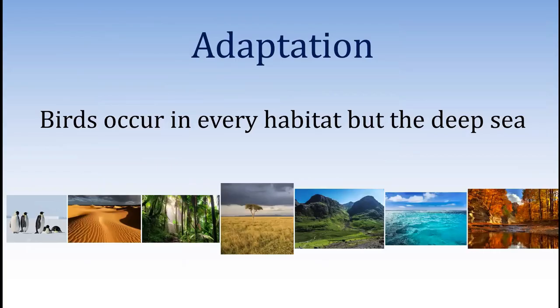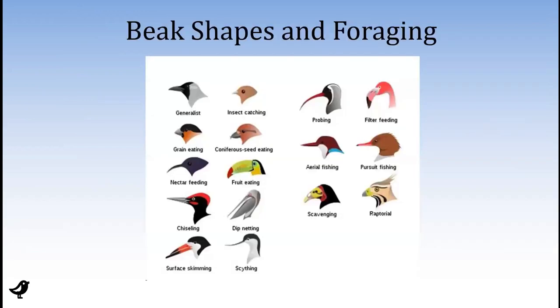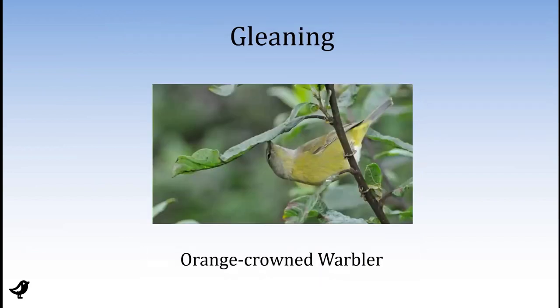Birds occur in every habitat but the deep sea — from the Sahara Desert to the Arctic and Antarctic. One quick way to look at this incredible adaptive radiation across the planet is simply to look at the shapes of bird beaks and the types of foraging behaviors they have.